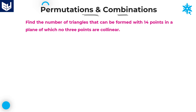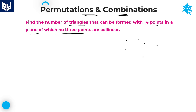The first question in this session: find the number of triangles that can be formed with 14 points in a plane, of which no 3 points are collinear.